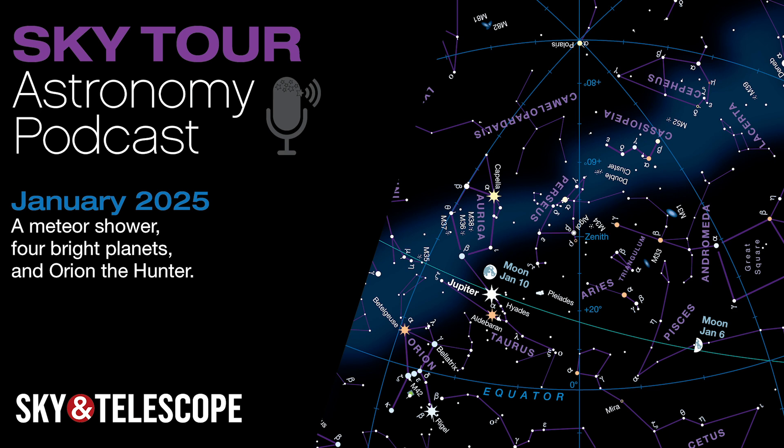In this episode, we'll start the new year with a meteoric bang, keep tabs on four bright planets, focus on Orion the Hunter, and welcome some other bright winter stars. So grab your curiosity, bundle up, and come along on this month's Sky Tour.